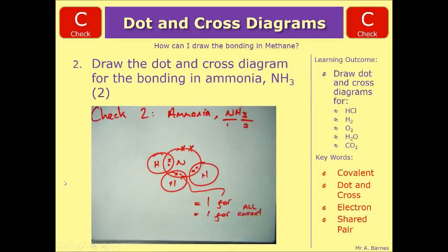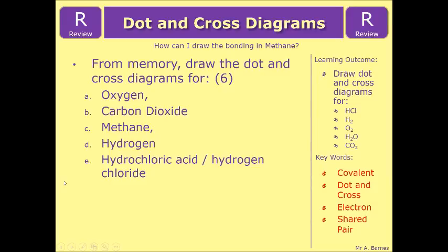Okay, that about sums up this video. What I'd like you to do now is have a go at the review question, which will test your memory based on what we've just done. For all the ones we've gone through today, draw the dot and cross diagrams: oxygen, carbon dioxide, methane, hydrogen, and hydrochloric acid. That ends this video. Thank you.